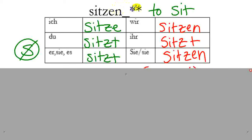'Sitzen' is weird, so watch out for this. In the du/er/sie/es, there's no S. So: ich sitze, du sitzt, er/sie/es sitzt, wir sitzen, ihr sitzt, sie sitzen.